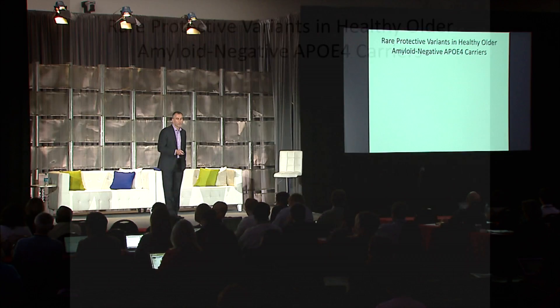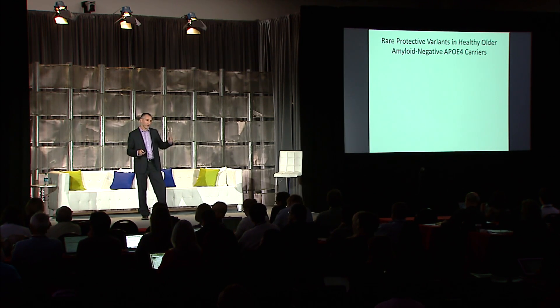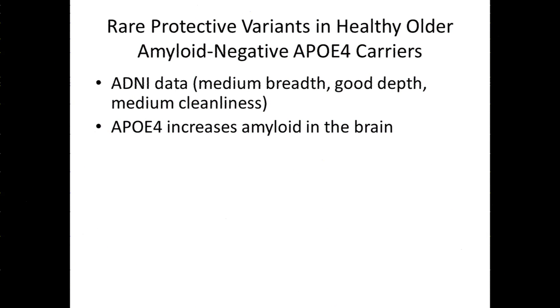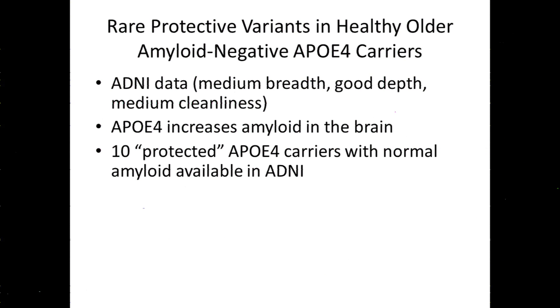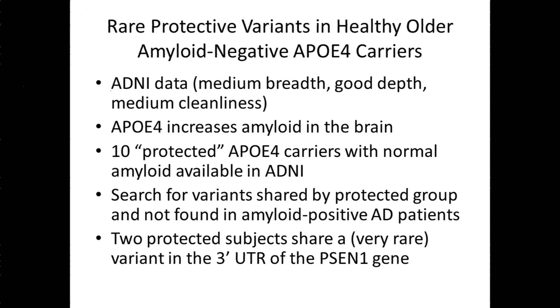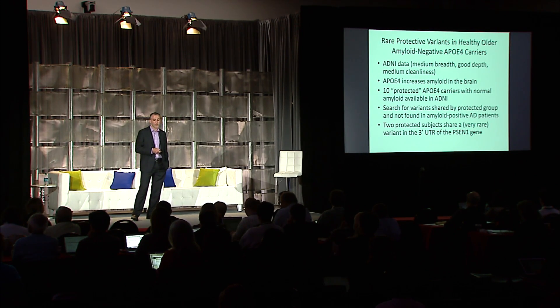Just a quick note on some work we've done with the ADNI dataset on a small scale. These are healthy older ApoE4 carriers — we know ApoE increases amyloid in the brain, which is one mechanism by which it causes Alzheimer's. We found 10 protected ApoE4 carriers who are older but have normal or negative amyloid scans. We compared rare variants in whole-genome sequence data from these 10 protected controls to amyloid-positive Alzheimer's disease patients. Preliminarily, two of these protected subjects shared a very rare, protein-modifying variant in the untranslated region of the presenilin-1 gene — the same gene implicated in autosomal-dominant Alzheimer's as in the Colombia kindred.